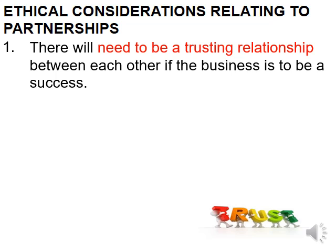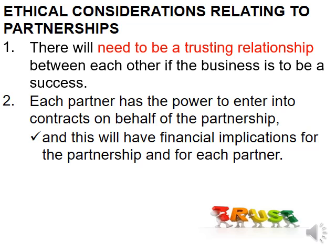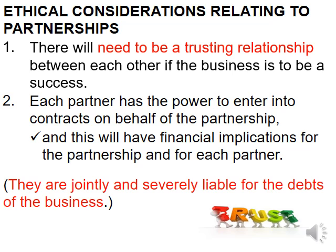There must be a trusting relationship between each partner for the business to succeed. Each partner has the power to enter into contracts on behalf of the partnership, which has financial implications for all partners. Whatever each partner does has an influence on the partnership and therefore on all partners involved. They are jointly and severally liable for the debts of the business. If one partner enters into a contract that causes losses, not only that partner but all other partners lose money as well.